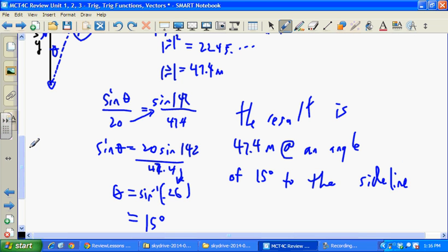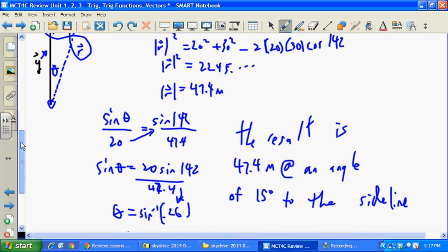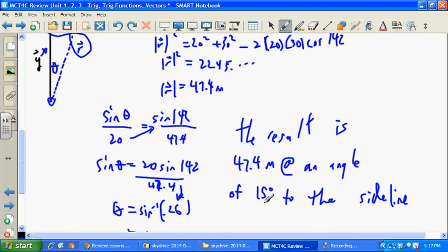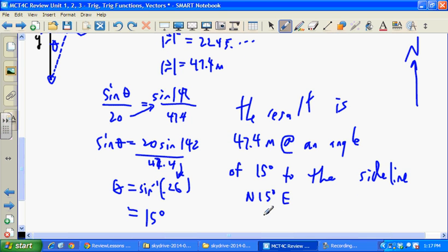So, the result is 47.4 meters at an angle of 15 degrees to the side. Remember, often our angles had some sort of direction on them. Like, if that's north, this would have been north 15 degrees east. Or, on a bearing, it would have just been 15 degree bearing. And there was a couple of ways to measure angles with these questions. Okay, and you can kind of choose which one. All right? Good. That's it for units 1, 2, and 3. The next one is on exponential functions.